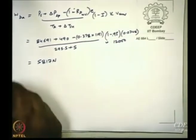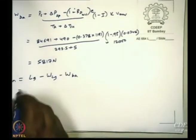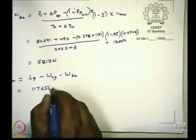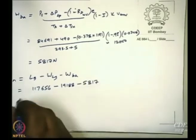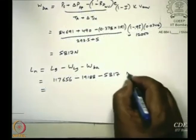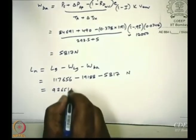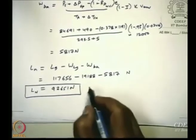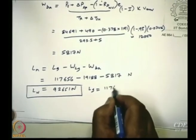So now you have everything. Now L_N is equal to L_G minus W_LG minus W_BA. So this will be equal to 117,655 minus 19,188 minus 5816. So what is L_N? The units are going to be Newton. That is the answer we are looking for. The net static lift is 92,651 Newtons and the gross static lift was 117,656 Newtons.